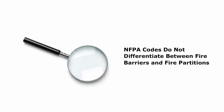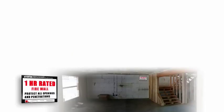The NFPA codes do not differentiate between fire barriers and fire partitions. However, by allowing exceptions to the requirements for fire barriers in cases where the IBC calls for fire partitions, and by adding requirements where a higher level of separation is necessary, the fire rating requirements of the codes are similar.